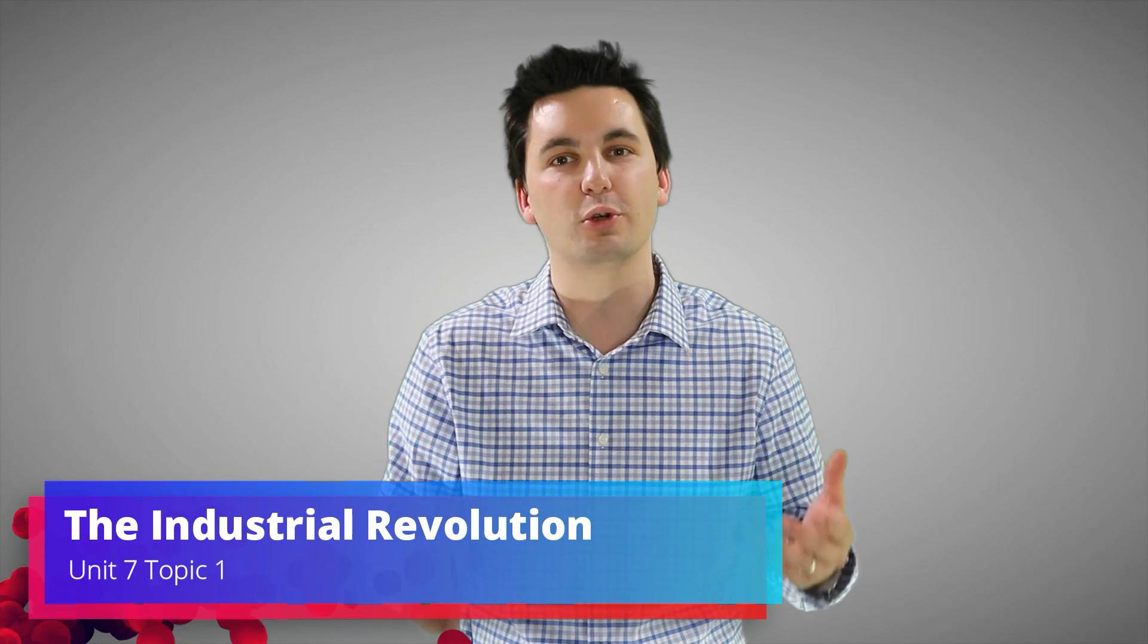Hello there geographers and welcome back to the Mr. Sin channel. Today is a very exciting day and somewhat of a sad day. It is the start of our very last unit of AP Human Geography. Today we start Unit 7. In this video we're going to be looking at Unit 7, Topic 1, the Industrial Revolution.